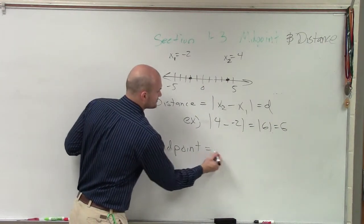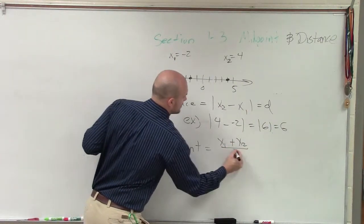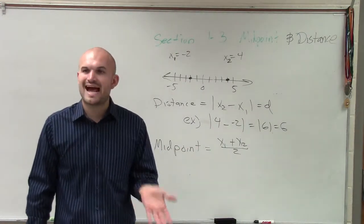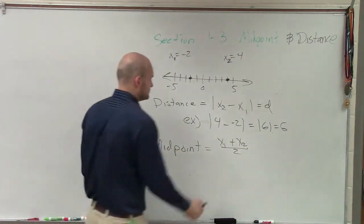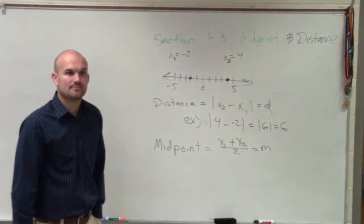I'm going to take x₁ plus x₂ and divide it by 2. So I take both points, add them up, and divide by 2. And that's going to equal my midpoint, all right?